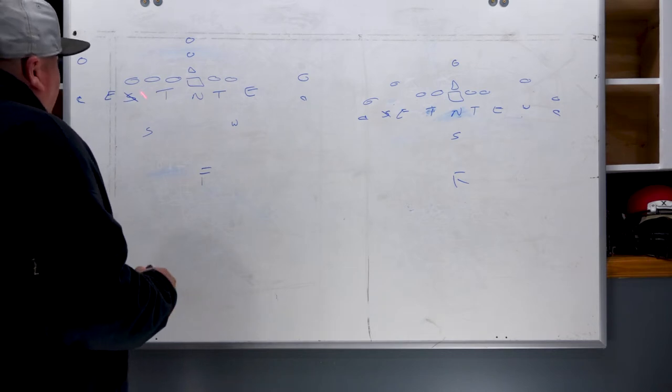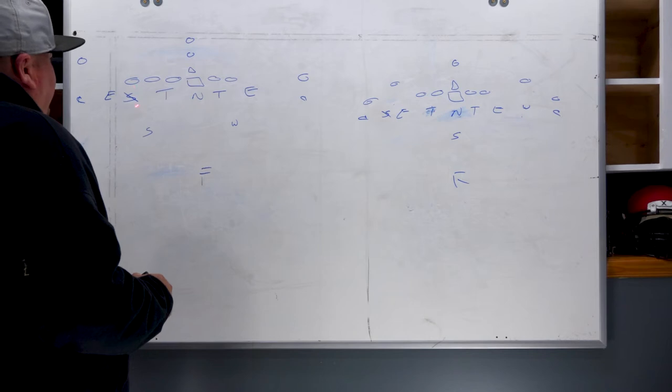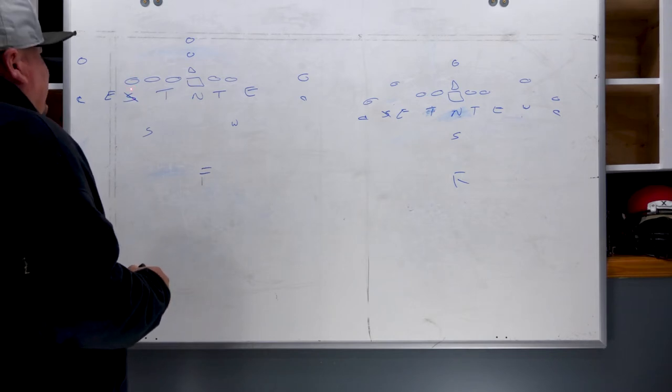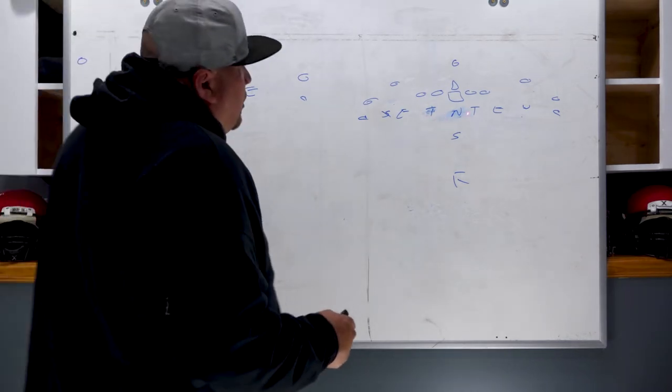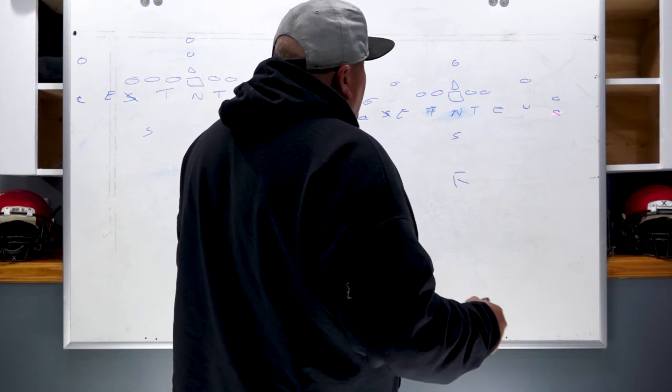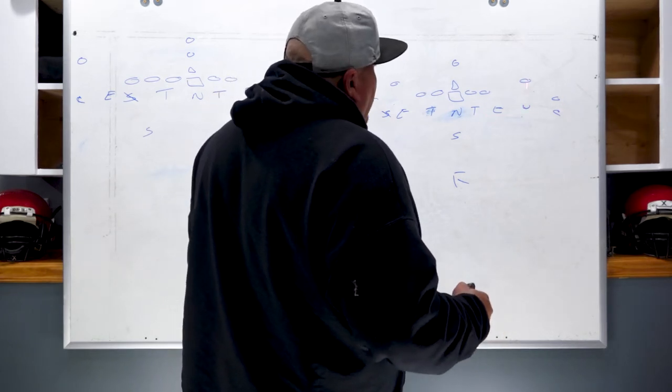The strong safety is going to come down and mug. He's mugging the tight end—that's a mug position—and you're going to sit him right on the tight end if there is a tight end. Same thing here: we're going to get Cover One. Corners lock up on number one. Strong safety and Will will lock up on number two.